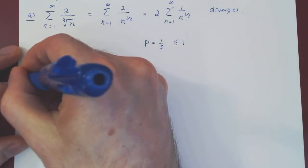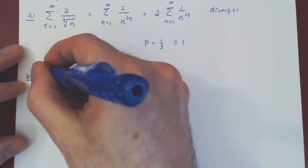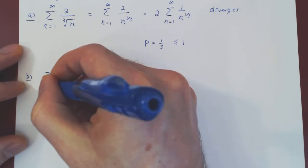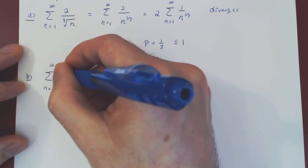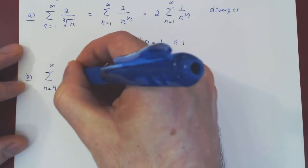Let's look at our second and last example. What if we try to sum, let's say from 4 to infinity, root of n over n squared.